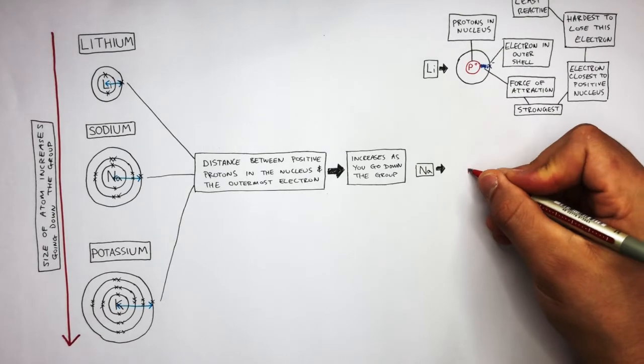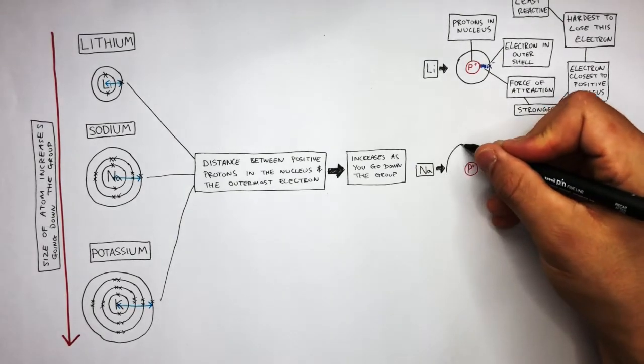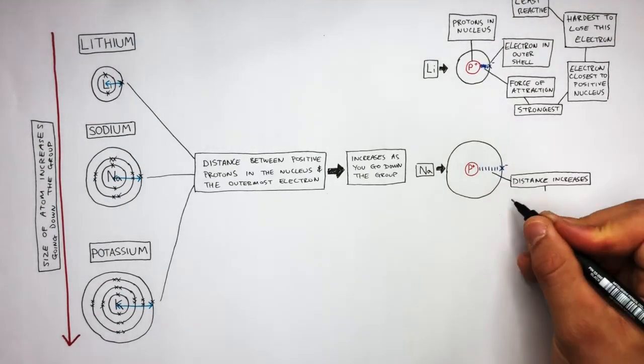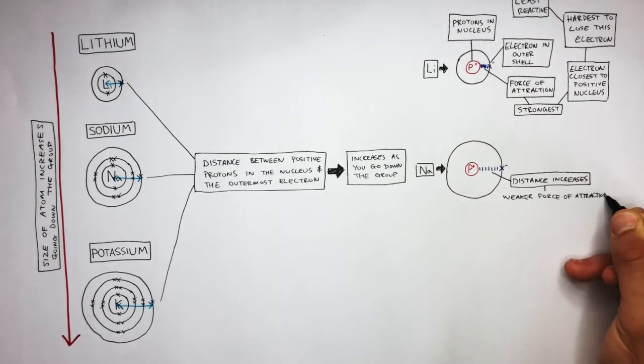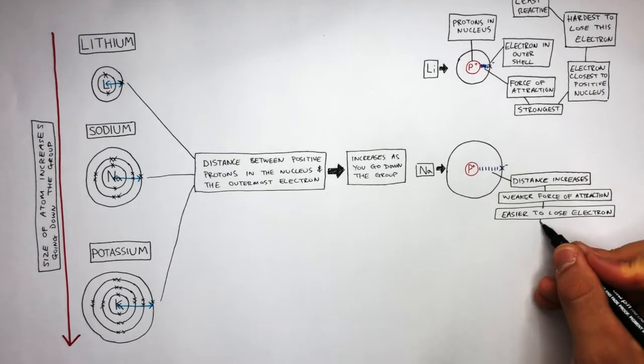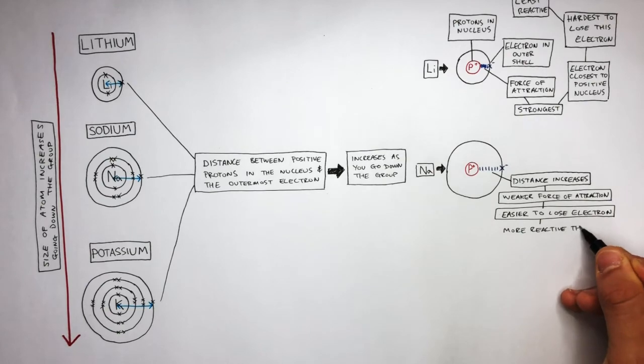Sodium is a bigger atom than lithium but here we're still drawing the outermost shell only. As the distance increases there is a weaker force of attraction. This makes it easier to lose the outer electron. Therefore sodium is more reactive than lithium.